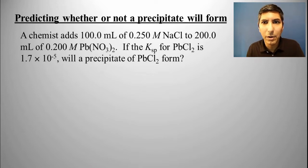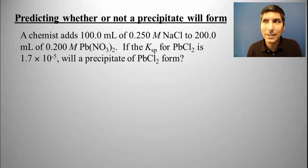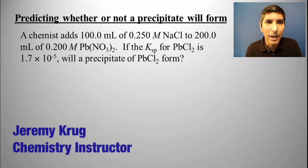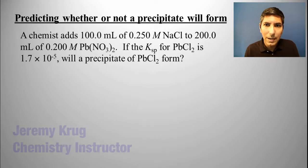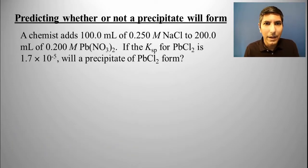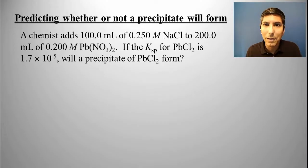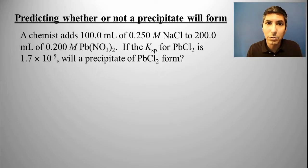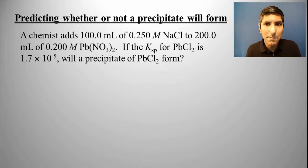Hi there, I'm Jeremy Krug, and in this video we're moving on with the next video in AP Chemistry Unit 7, Section 11. This is about how we can work with solutions and equilibrium. In this video, we're actually going to see if we can predict whether or not a precipitate is going to form based upon the addition of two solutions. There's a lot going on here, so you'll need to pay close attention. Keep your calculator handy and follow along with these calculations.